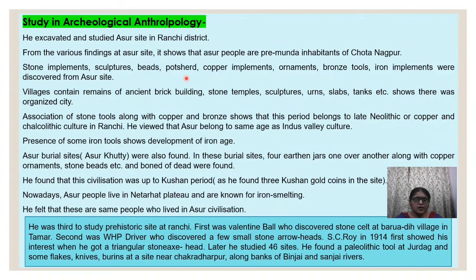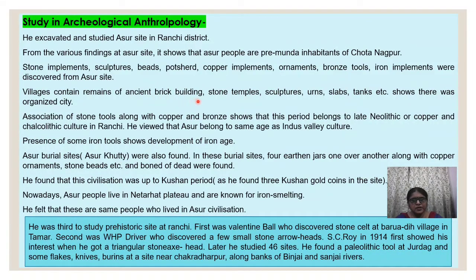Many implements, tools, portraits, ornaments in copper, bronze, and iron, along with stone tools and metal tools, were found. The villages also contained remains of ancient big buildings, stone temples, sculptures, arms, slabs, and tanks — showing that there was an organized city. The association of stone tools along with copper and bronze shows that this period belongs to the late Chalcolithic and copper age culture, while the presence of iron tools indicates the development of the Iron Age.